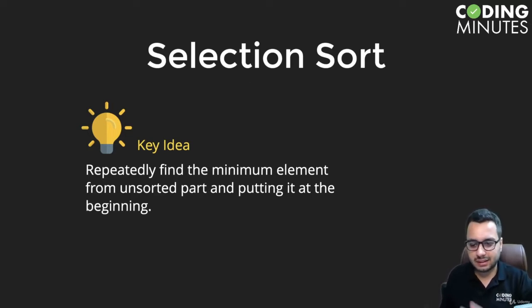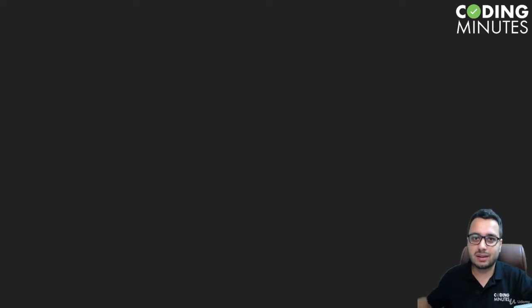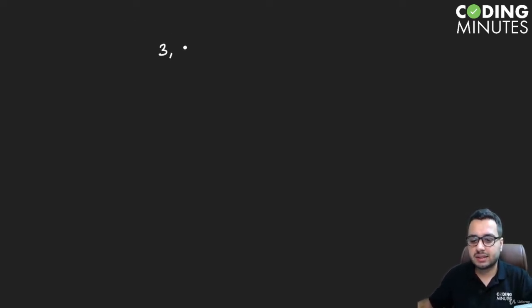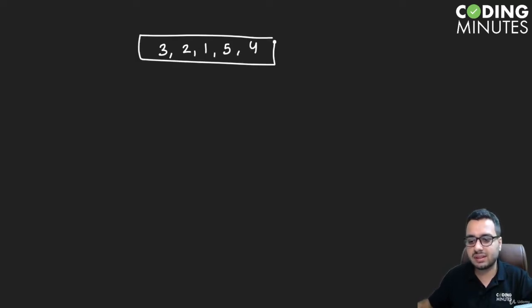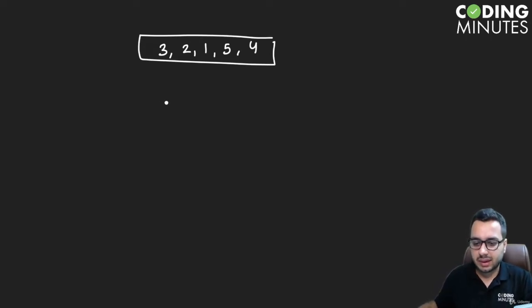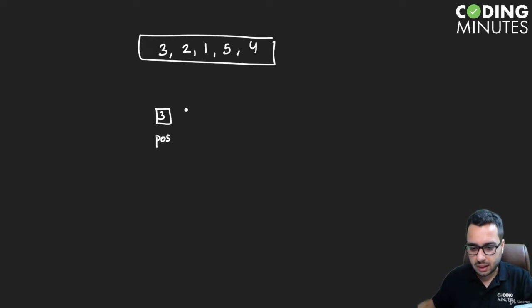Let's go through an example to understand it better. Say we have an array like three, two, one, five, and four, and we want to sort it using selection sort. We can break this array into two parts — a sorted part and an unsorted part.